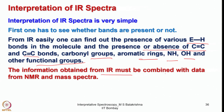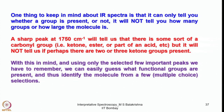The information obtained from IR must be combined with NMR and mass spectra for precise structure elucidation of an unknown sample. One important limitation to keep in mind is that IR spectra are qualitative — they can only tell you whether a group is present or not. They will not tell you how many groups are present or how large the molecule is. Even a tiny amount, if present, can show up.